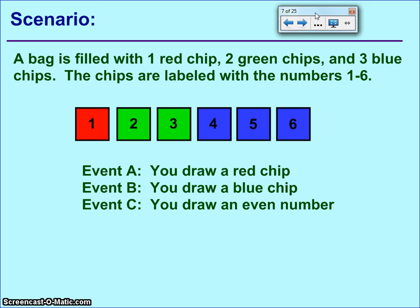This is a scenario that I'm going to use for both and and or statements. We're going to fill a bag full of chips. It's got one red chip, two green chips, and three blue chips in there. Those chips are also numbered as they are pictured right there, one through six. We're also going to define events A through C as: A, you draw a red chip; B, you draw a blue chip; and C, you draw an even numbered chip. If you need a moment to review that, pause and play.